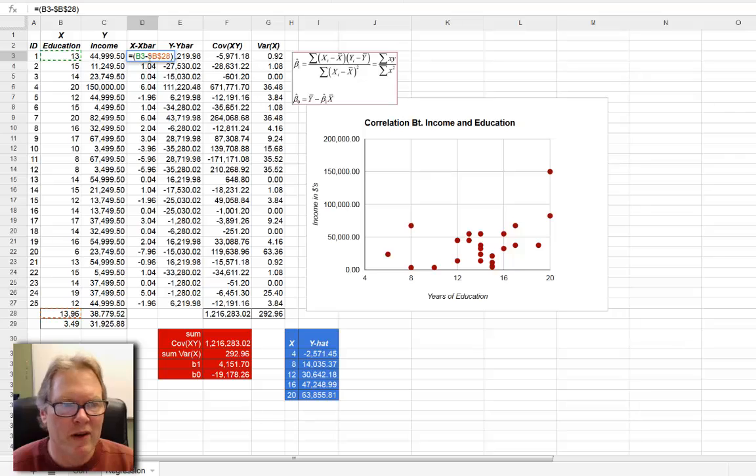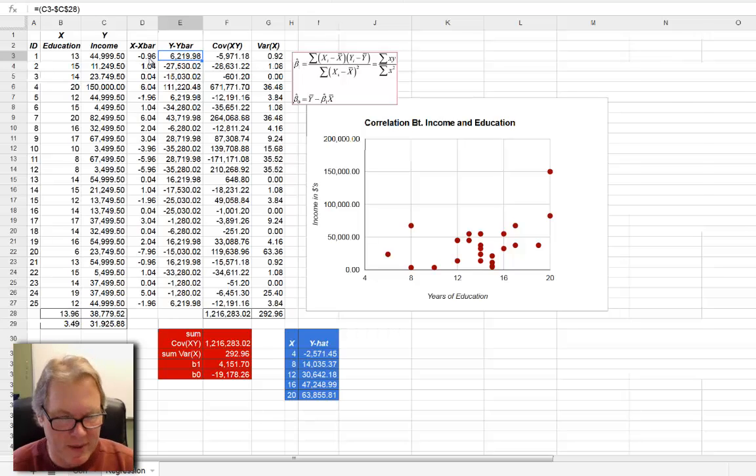that I'm taking the difference of the value in cell B3 and the value of cell in B28, which is the mean of all those numbers, and I've simply copied that down this row so that I'm taking the difference between each value and its mean. That's my x minus x bar part of this. Over here in column E, I'm doing the same thing, but this time I'm doing it looking at the difference between the mean of my dependent variable and its actual observed value.